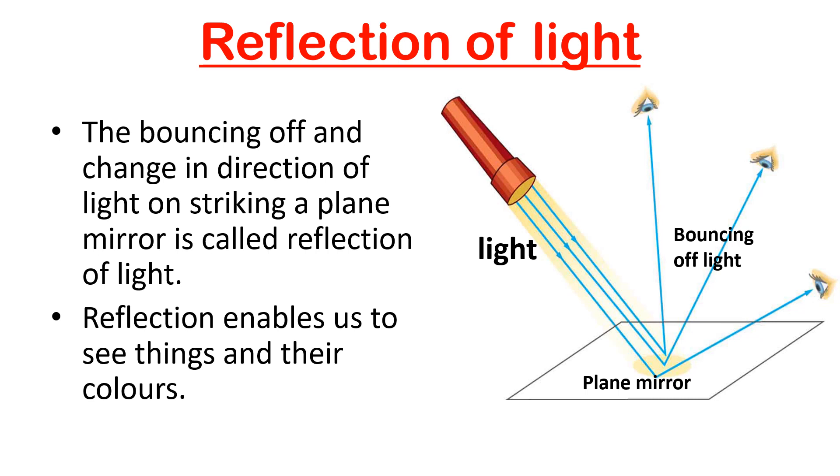Reflection of light. As you can see in the figure, the bouncing off and change in the direction of light on striking a plane mirror is called reflection of light. And reflection enables us to see things and their colors.